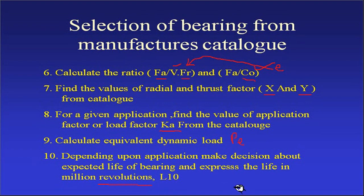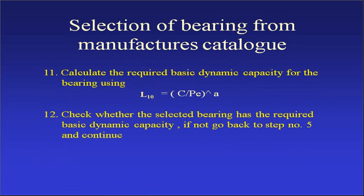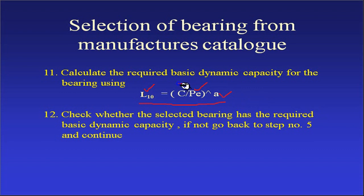Express the expected bearing life in terms of million revolutions. If the life is given in hours, convert it to million revolutions in terms of L10. Then use the load-life relationship: L10 is calculated using P (the equivalent dynamic load from FA, FR, X, V, and Y), and the exponent a is 3 for ball bearings and 10/3 for roller bearings, to calculate the required dynamic capacity C.